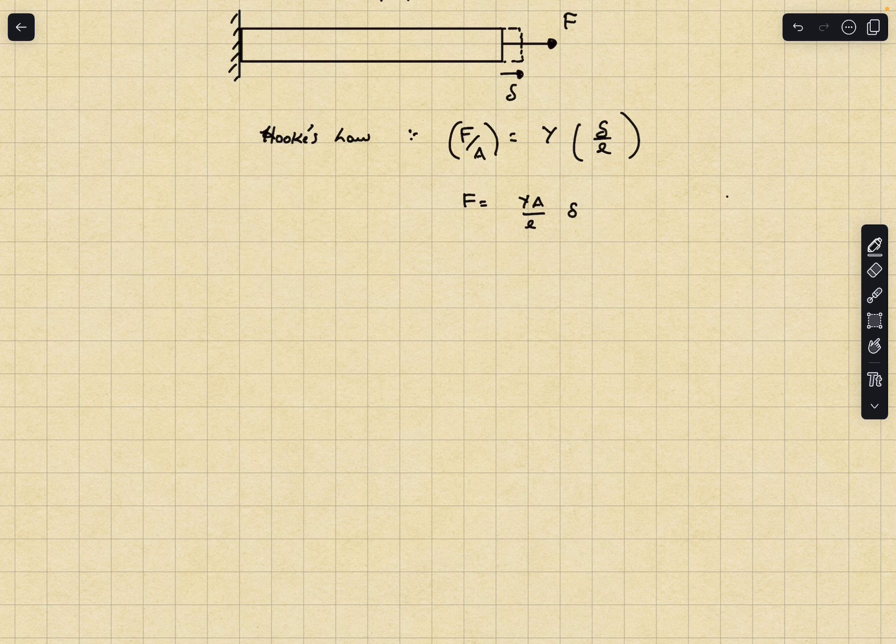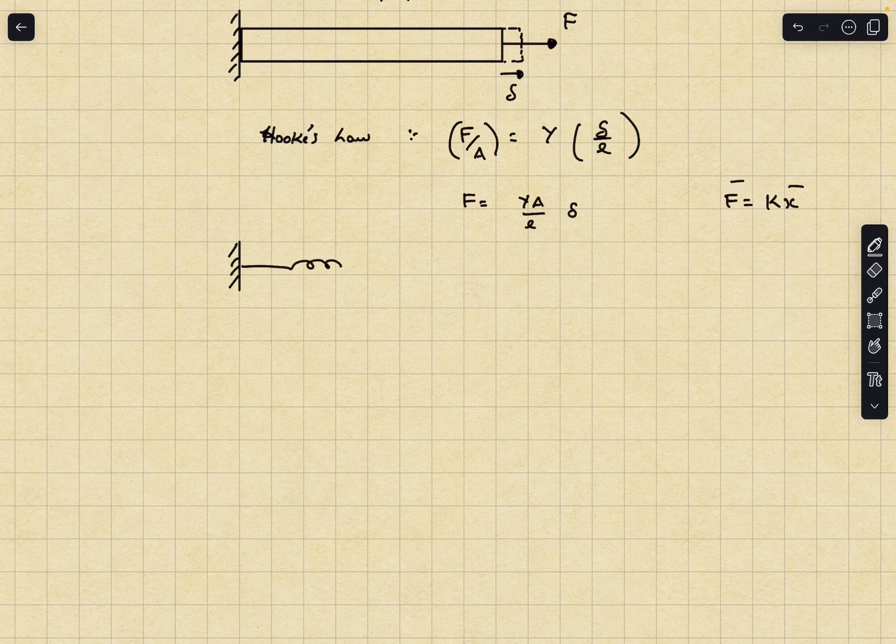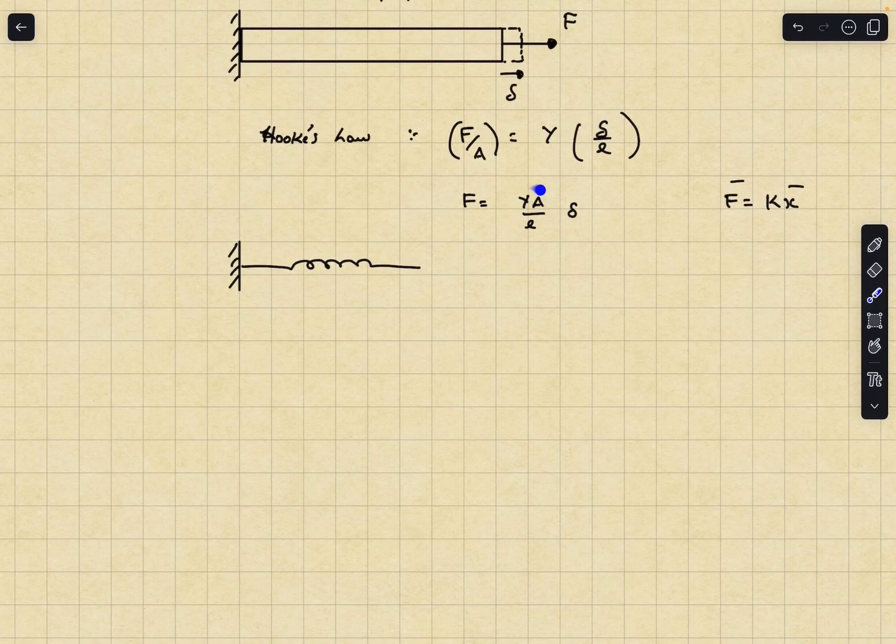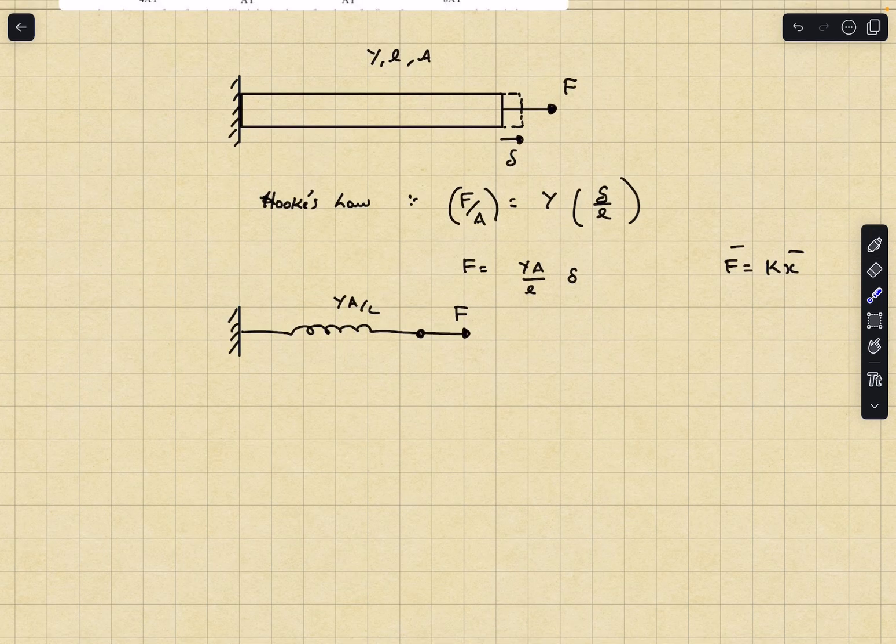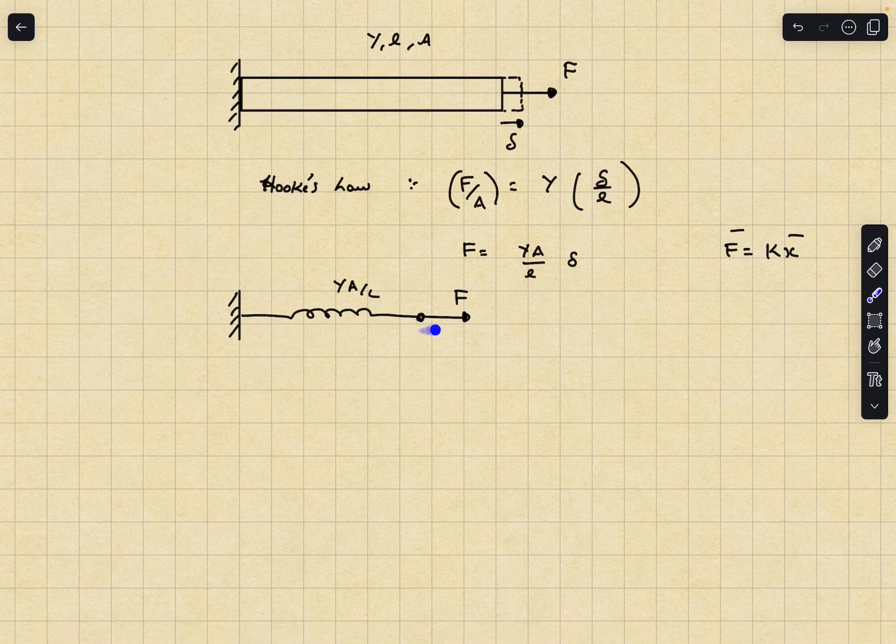This is exactly similar to the response we obtained for a linear spring. When we apply a force F on a spring the elongation X and the force F is related by F equals KX. So essentially these two problems are the same. I can treat this rod as an equivalent spring whose equivalent spring constant if you compare these two equations is YA by L.